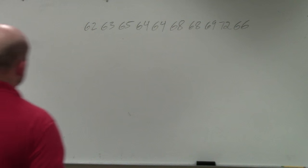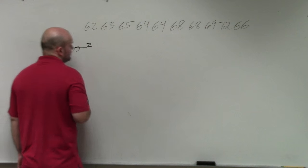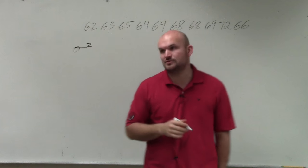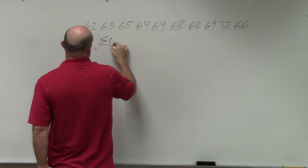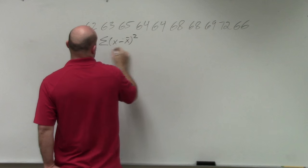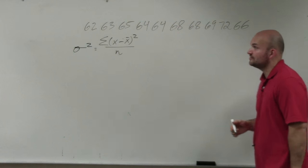We went over two things. We talked about variance, which is lower case sigma squared. And that equals the summation of our values minus the mean squared divided by the number of terms n. That is the variance.